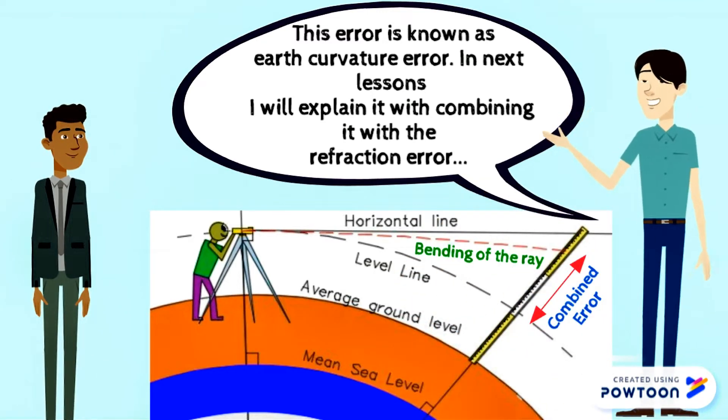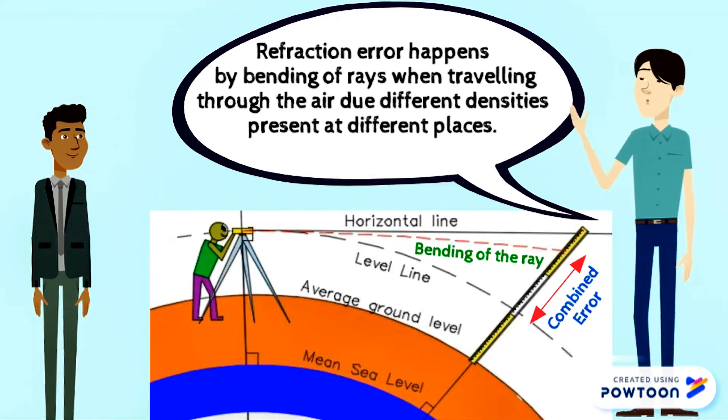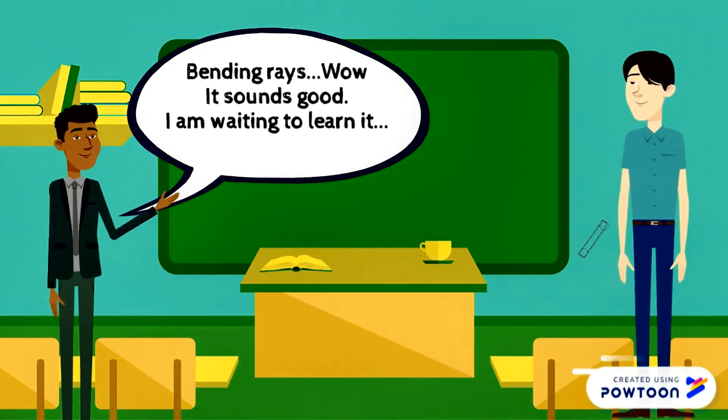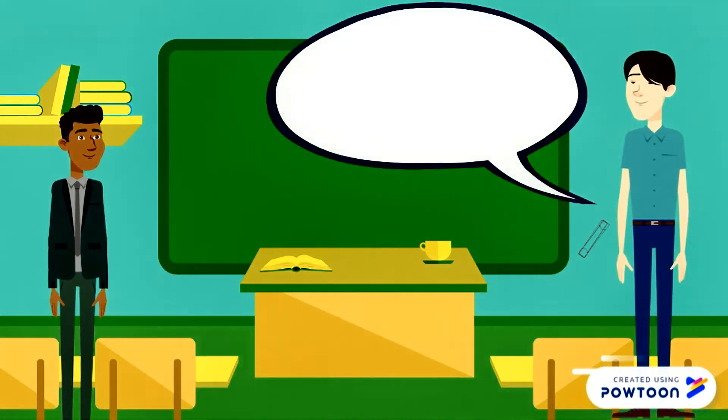In next lessons I will explain it with combining it with the refraction error. Refraction error happens by bending of rays when traveling through the air due to different densities present at different places. Bending rays, wow, it sounds good. I'm waiting to learn it.